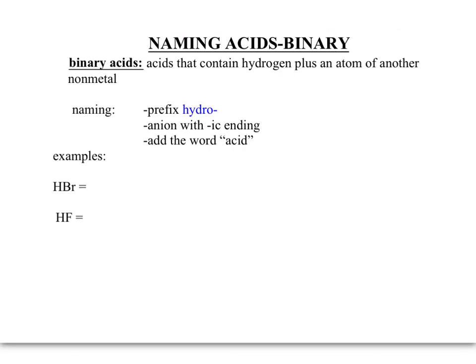There are two types of acids that we are going to be writing the names and chemical formulas for. The first type is a binary acid — an acid made of hydrogen plus an atom of another non-metal. This type of acid is made of two types of atoms, and that's why we see the prefix 'bi.'